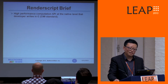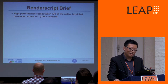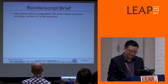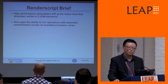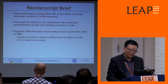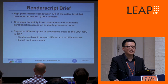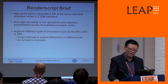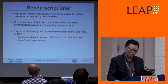RenderScript lets you write high-performance computation tasks at the native level, similar to writing C language. It gives applications the ability to run operations with automatic parallelization across all available processing cores. A key advantage is supporting different types of processors — both different architectures and different numbers of cores — so you don't need to recompile your code for different processors.